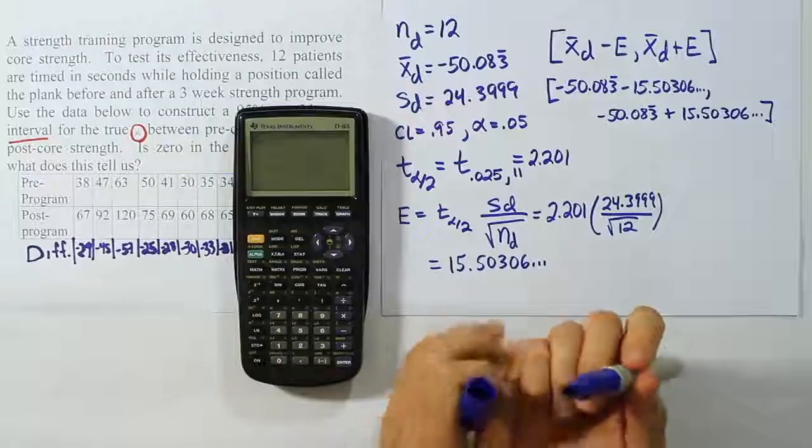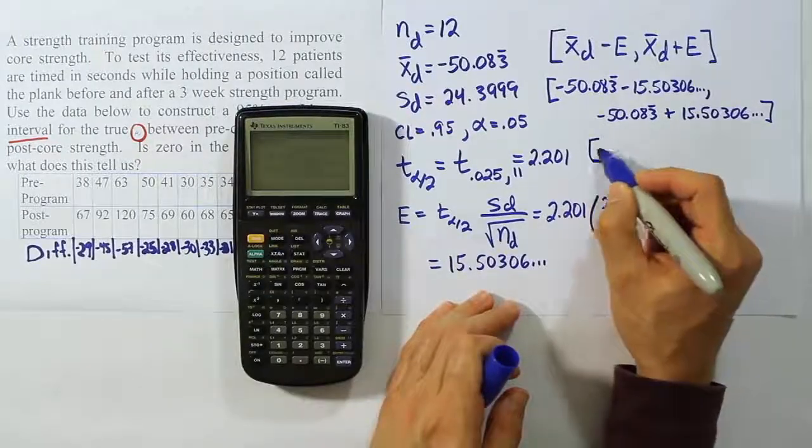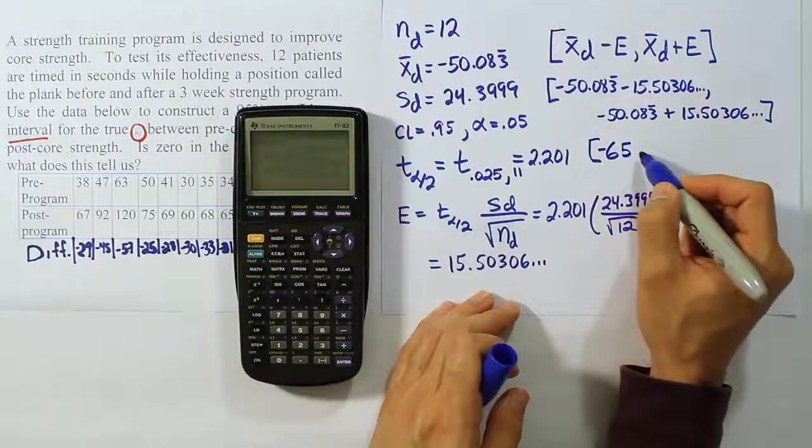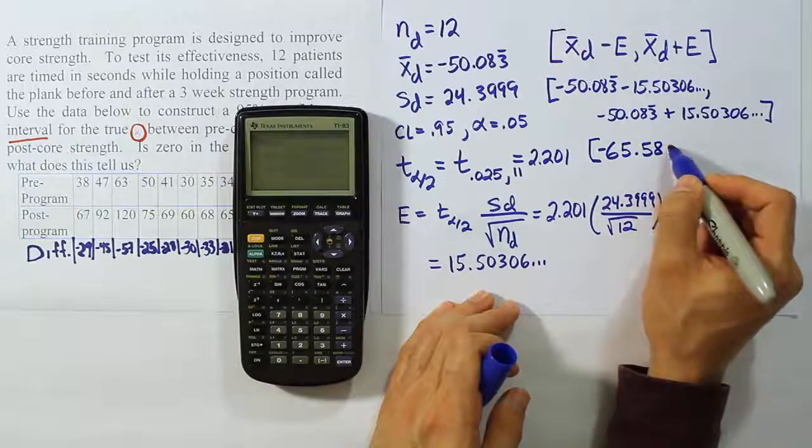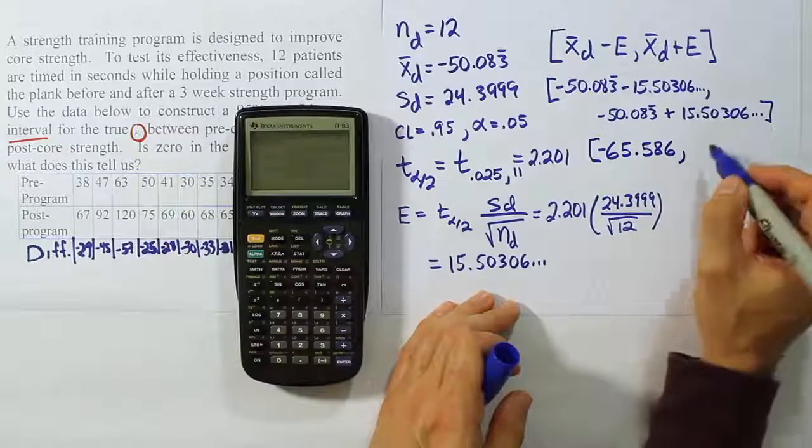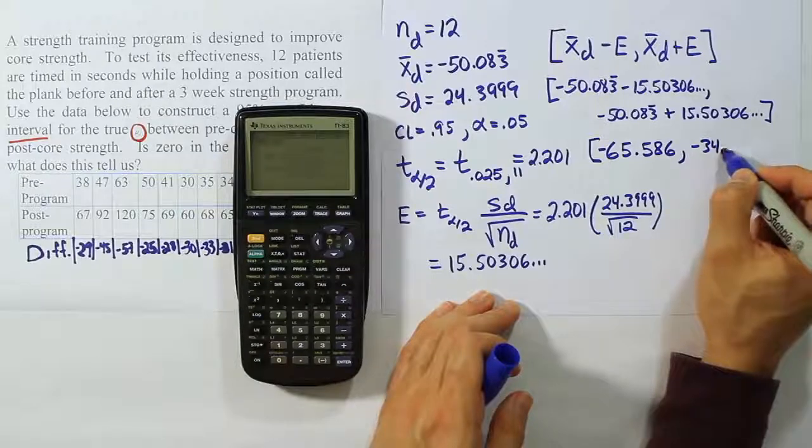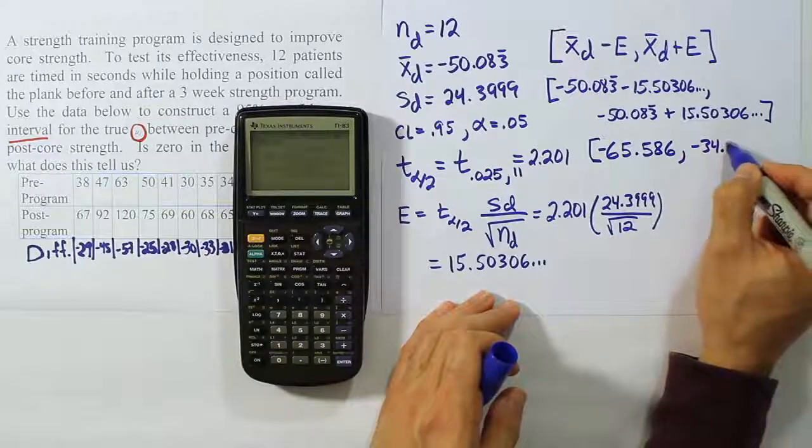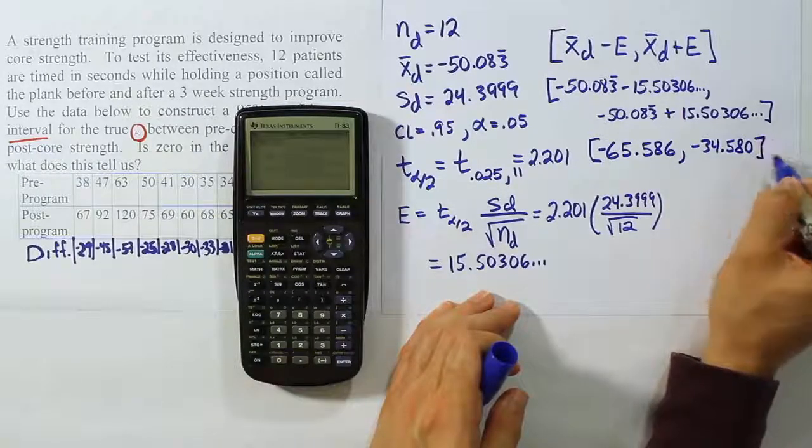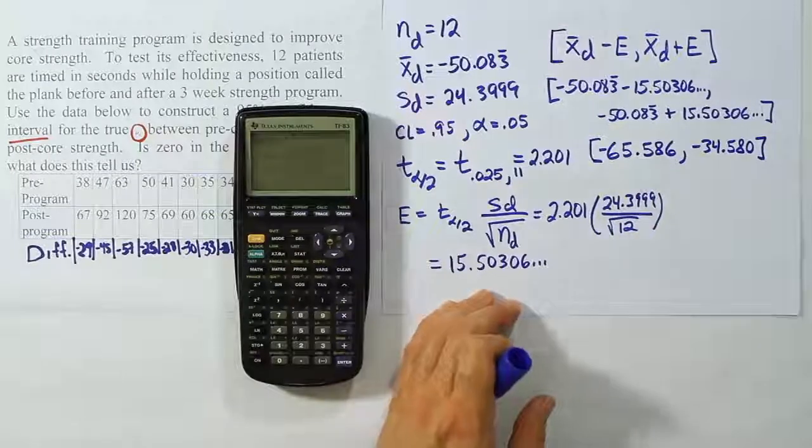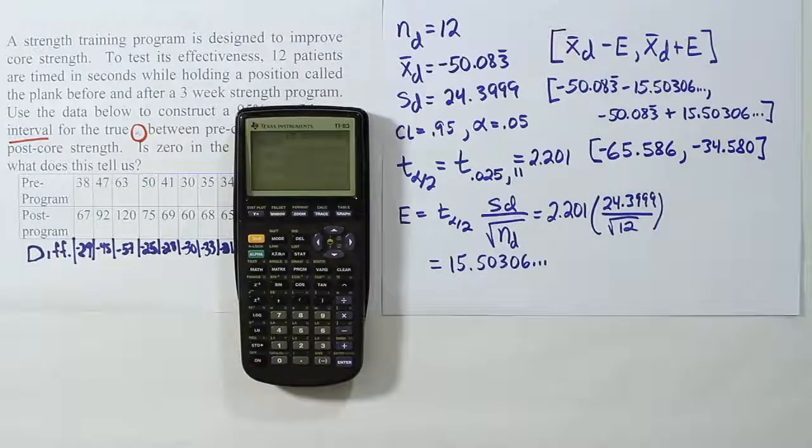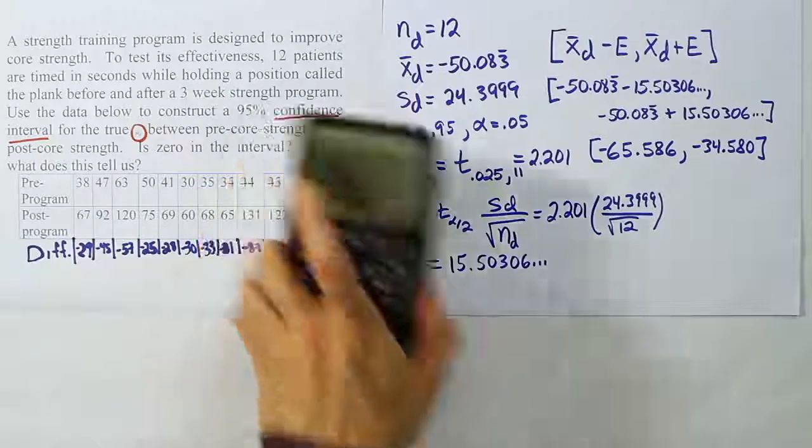All right, when we're done with that, we end up with the answer for the interval to be minus 65.586 up to minus 34.580. So that's our interval, and what we're saying is that the average difference is going to be inside of that interval.